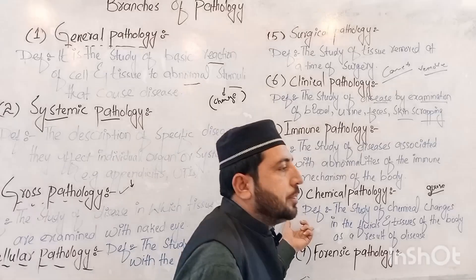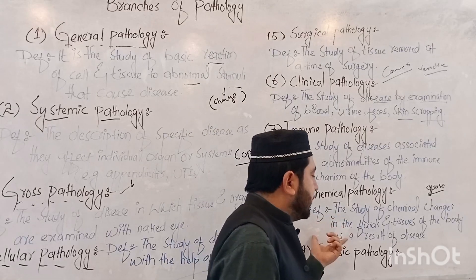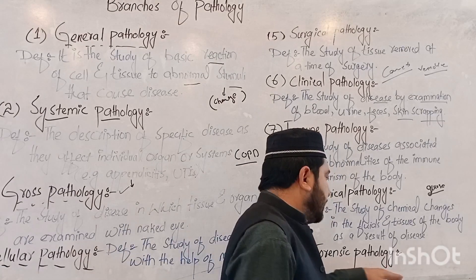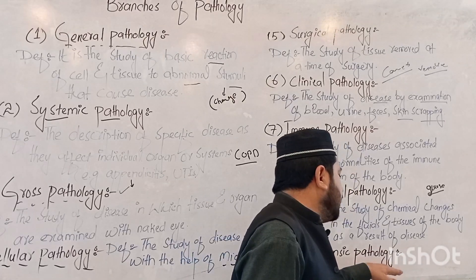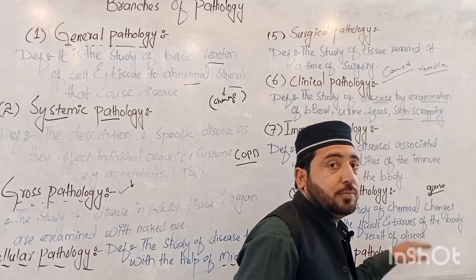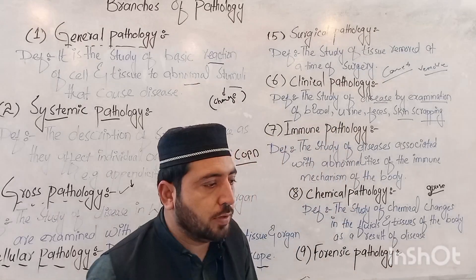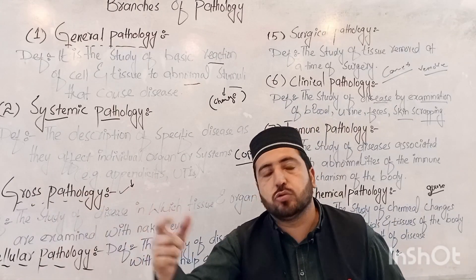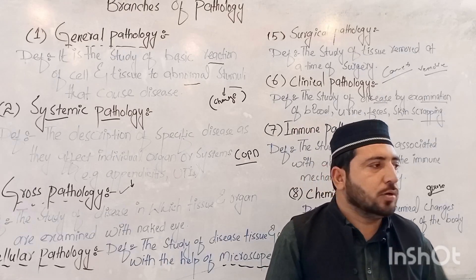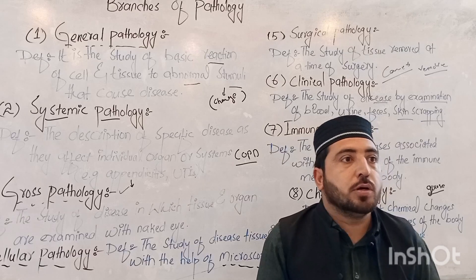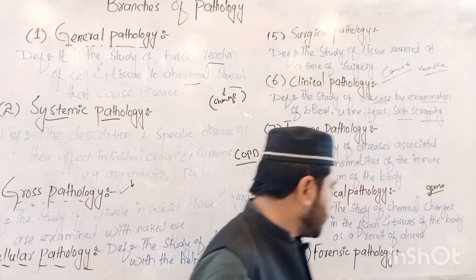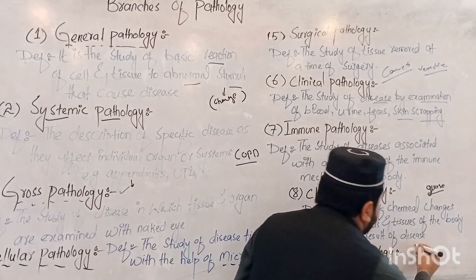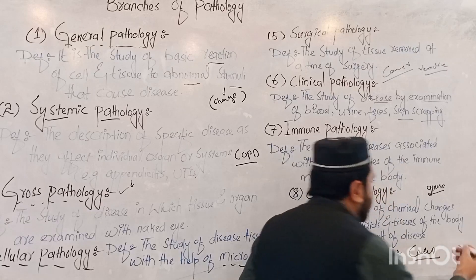Forensic pathology, also called post-mortem pathology or autopsy, is the study of the body after death. If a patient has died — whether from natural causes, suicide, or other circumstances — forensic pathology is used to examine the evidence and determine the cause of death for legal and medical purposes.